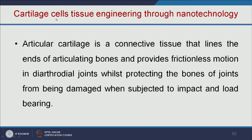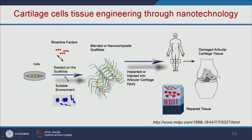Cartilage cells can also be tissue engineered through nanotechnology. Articular cartilage is a connective tissue that lines the ends of articulating bones, providing frictionless motion and protecting the joints. We seed cells on the scaffold and add bioactive growth factors and a suitable environment including mechanical force. The nanocomposite will form cartilage cells in the artificial scaffold, which could be injectable or implantable into patients with damaged articular cartilage.